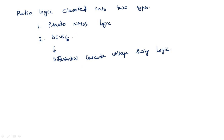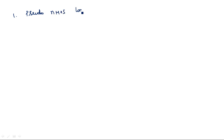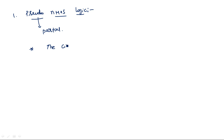Let us see what is meant by pseudo NMOS logic. The word pseudo means partial or half. When pseudo NMOS is considered, half of the circuit is made up of a pull down network consisting of NMOS transistors, and the pull up network consists of a single load — either a load resistor or a transistor.